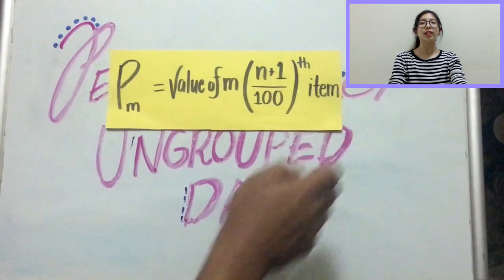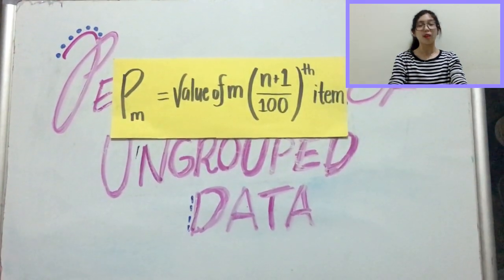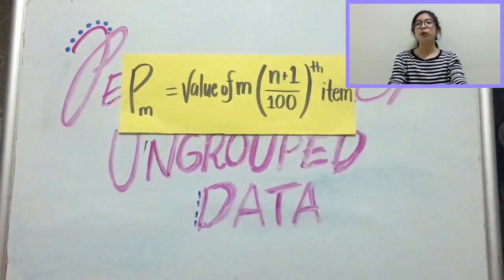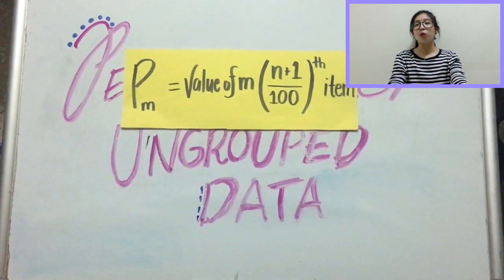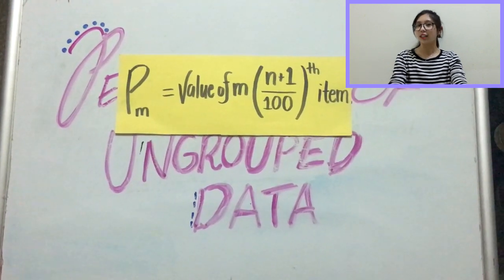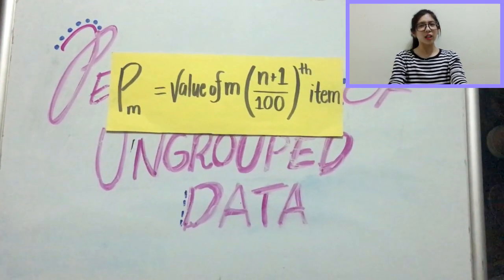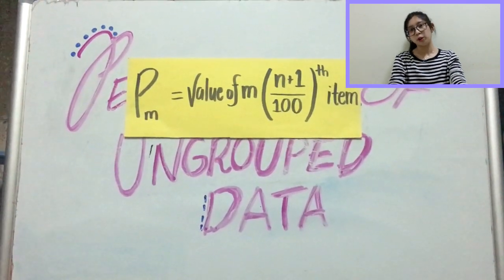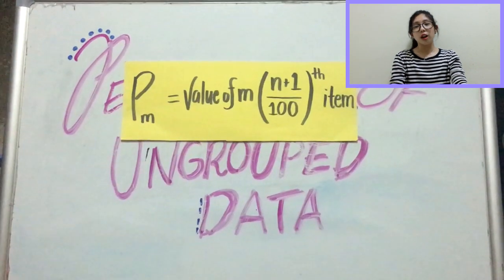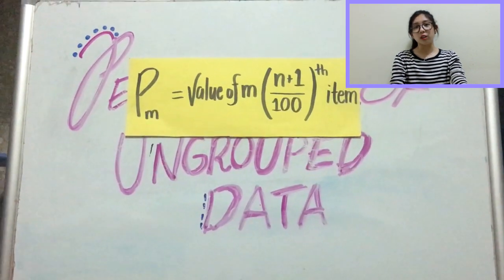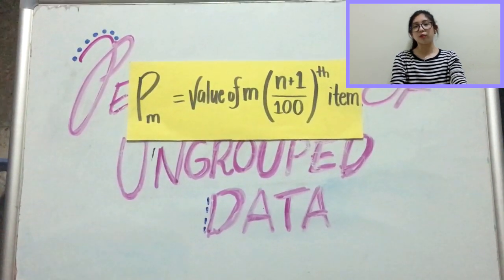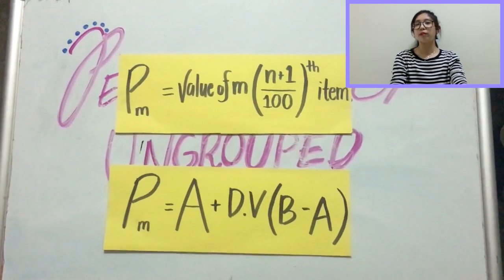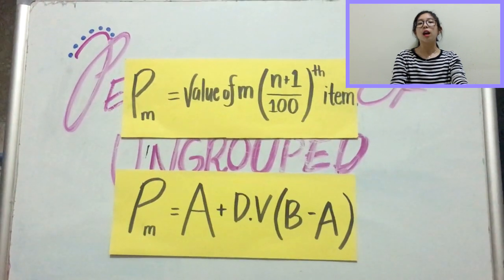Now, for the two formulas of percentile of ungrouped data. First formula: M percentile is equal to the value of M multiplied by N plus 1 over 100 to get the nth item. If your nth item is a whole value, you don't have to proceed to the second formula. But if your nth item is a decimal value, proceed to the second formula. For the second formula, M percentile is equal to A plus the decimal value multiplied by B minus A.